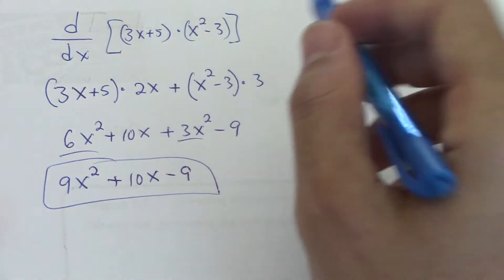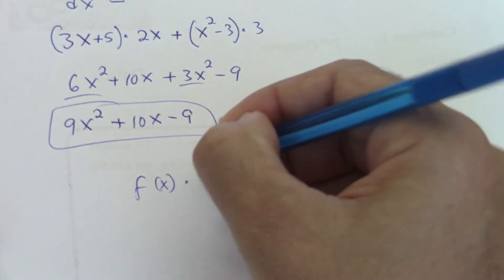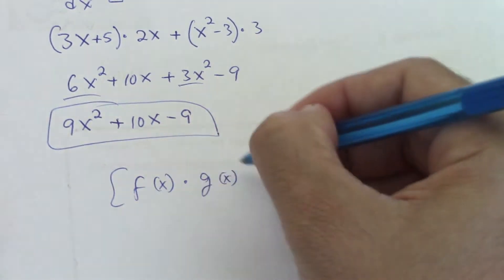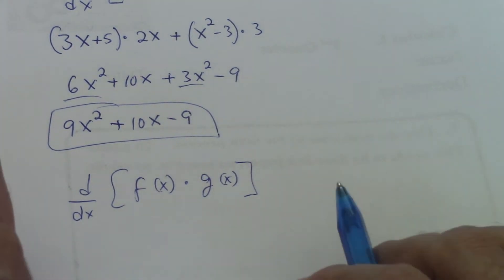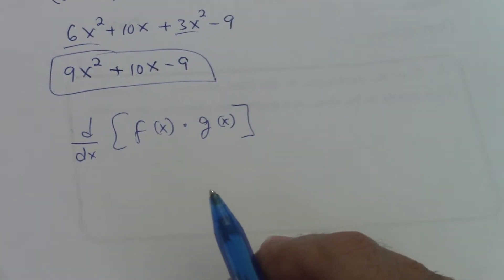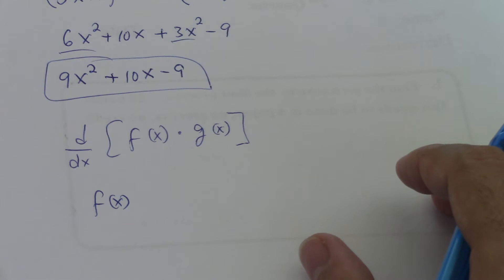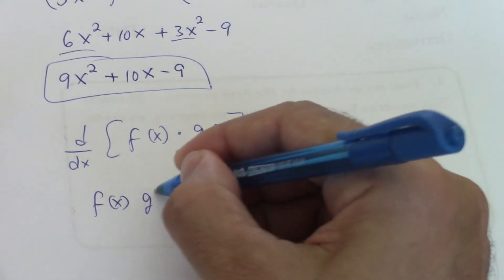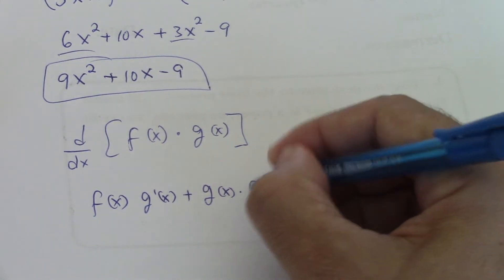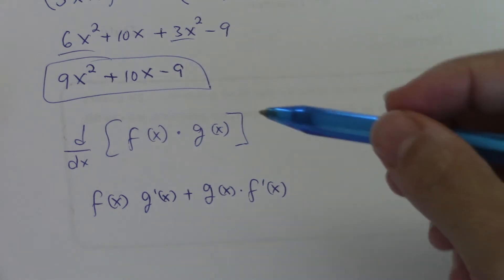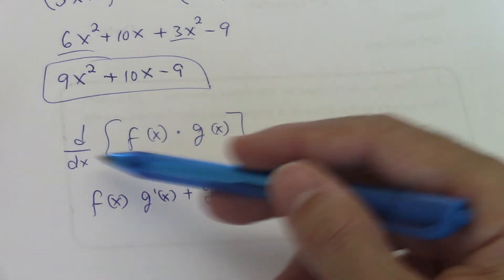This is the product rule because you're multiplying two functions. So you have f(x) times g(x) and you want to find d/dx — you have two functions, that could be any two functions. So you write the first one, f(x) — that would be like the general rule — times the derivative of the second one, plus the second one g(x) times the derivative of the first. Basically this is the rule for the product when you're multiplying two functions and you want to find the derivative.